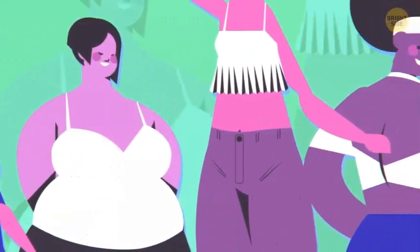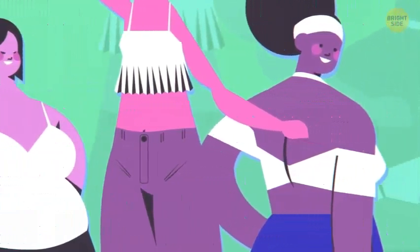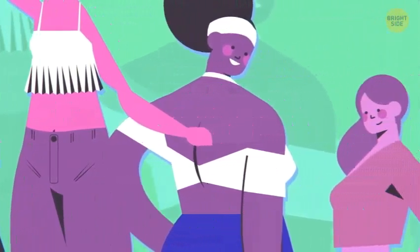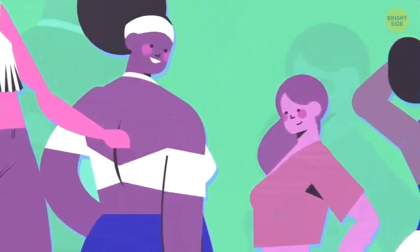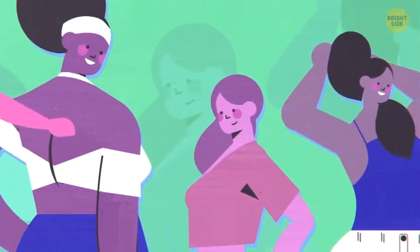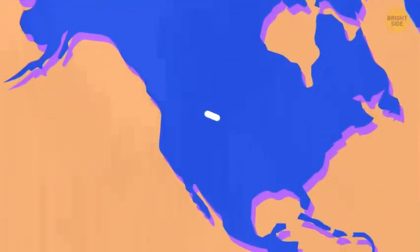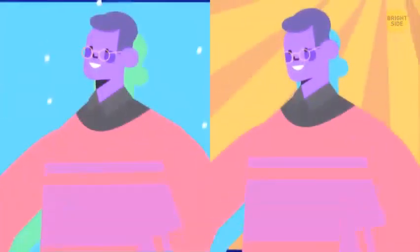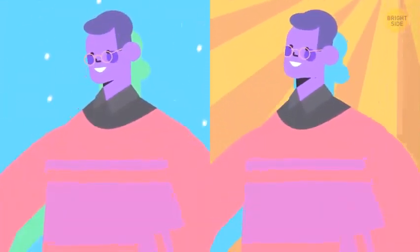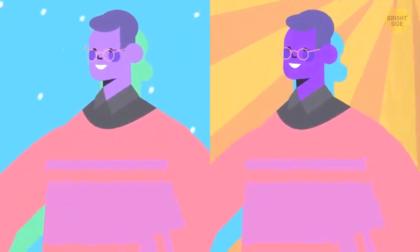Our height, shape of our body, and skin color depend a lot on where our ancestors used to live. But we can adapt to new conditions even within our own lifespan. For example, if you move from plains to the mountains, you'll eventually develop more red blood cells to compensate for the lack of oxygen. And naturally, if you move from a colder climate to a hotter and sunnier one, your skin will get darker to adapt.